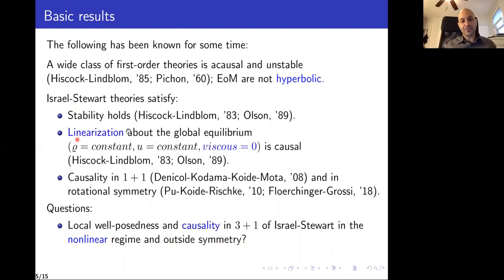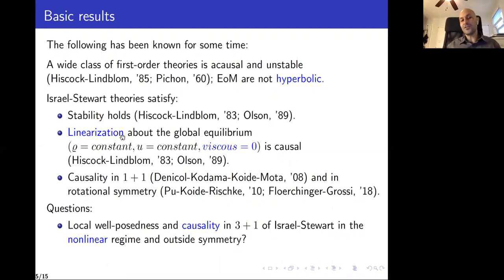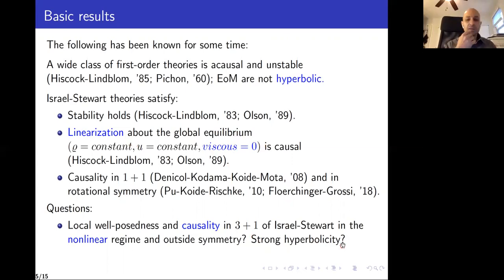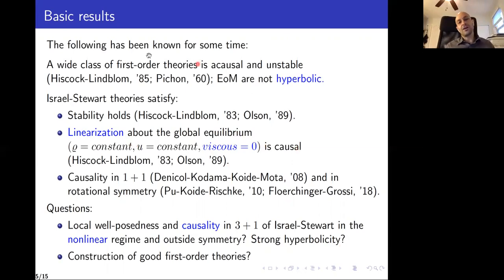The standard causality seen in the literature is for the linearization of the equations — and not the linearization about arbitrary states, but about the global equilibrium. We also don't know if the Israel-Stewart equations are in general a strongly hyperbolic system. And even though we have instability and acausality results for certain first-order theories, that does not rule out that every first-order theory is bad. We'd like to know if we can construct good first-order theories that are causal, stable, and have a well-defined initial value formulation.